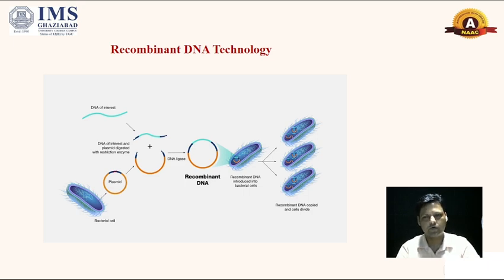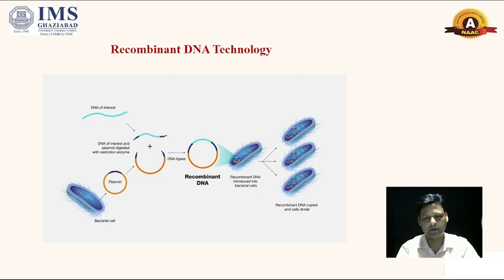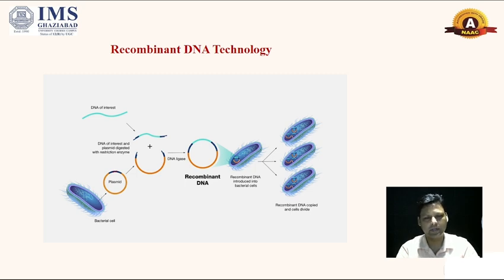We need to understand recombinant DNA technology, where we are targeting the gene of interest — the DNA of interest. We have to isolate that DNA of interest, which can then be ligated onto a vehicle called a vector. The vector will be the travelling partner for that gene of interest, which will be introduced into a foreign cell, or host cell. This foreign DNA will be introduced into the host cells — for example, E. coli cells.